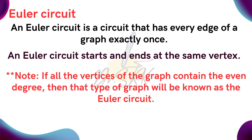Now coming to the definition of Euler circuit. An Euler circuit is a circuit that uses every edge of a graph exactly once. An Euler circuit starts and ends at the same vertex. Here we have an important note: if all the vertices of the graph contain an even degree, then the type of graph will be known as Euler circuit.